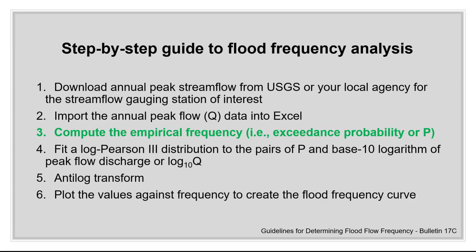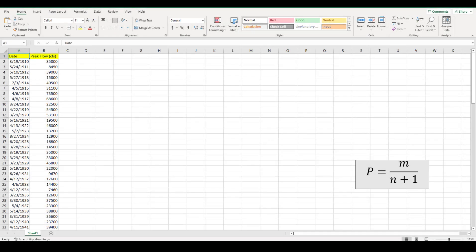Let's go to Excel and I will show you how you can use the data that you have downloaded to calculate exceedance probability. This Excel sheet shows the data that we downloaded and then processed. We have column A to be date and column B to be peak flow in CFS, cubic feet per second. This is our Q.